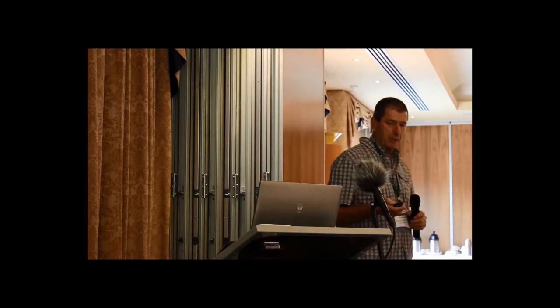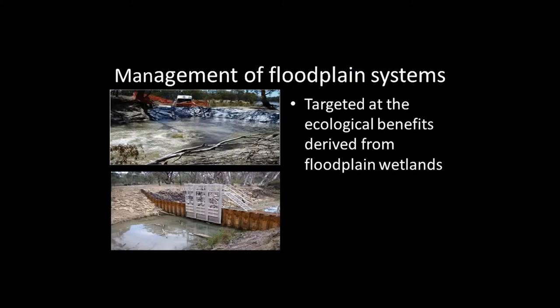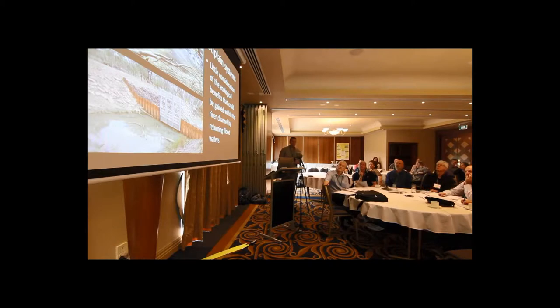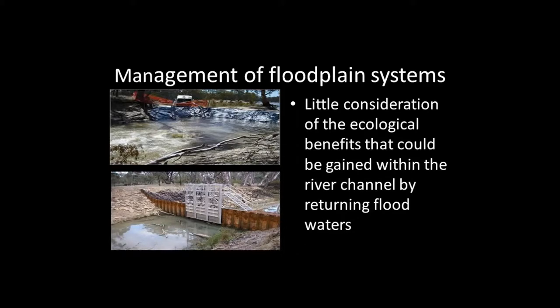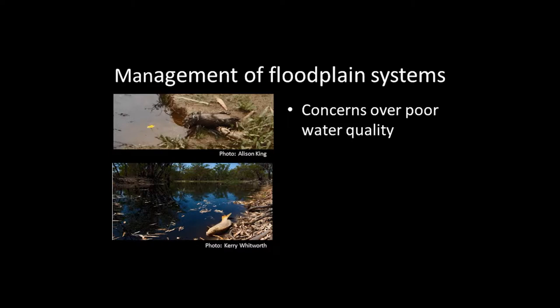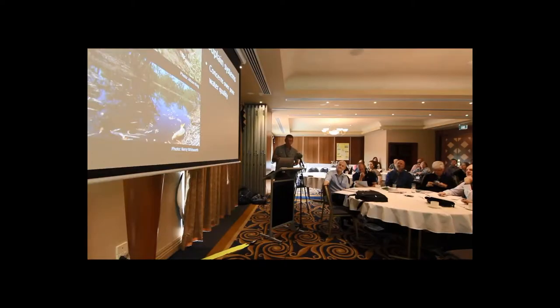In the past ten years or so, during the so-called millennium drought, connectivity was very much a one-way street. We managed our wetlands for some very targeted ecological benefits such as the health of river red gum forests. Little consideration was given to returning water back to the main river channel and to what benefits the river channel or the biota within it could derive from returning floodwaters. This was mainly because there were concerns over water quality — we had the so-called hypoxic blackwater events, which resulted in substantial fish deaths, crayfish becoming terrestrial, and other adverse impacts.